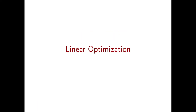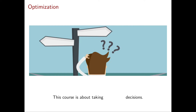Let's start with the name of this course, which is Linear Optimization. Let's forget about linear for now and focus on the word optimization. The field of optimization is all about taking decisions. As the name suggests, in optimization we don't want to take just any decision, but we want to take optimal decisions. Every day in your life you take a huge number of decisions.